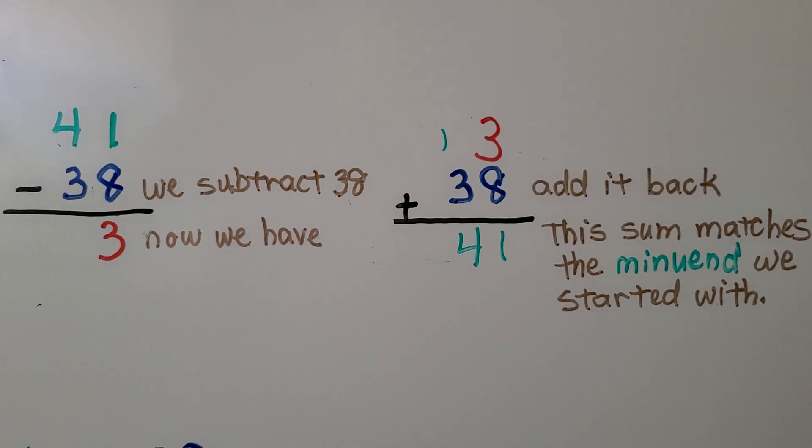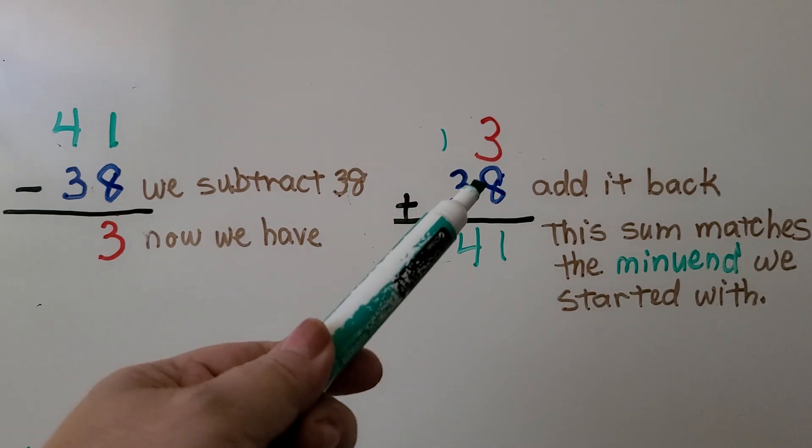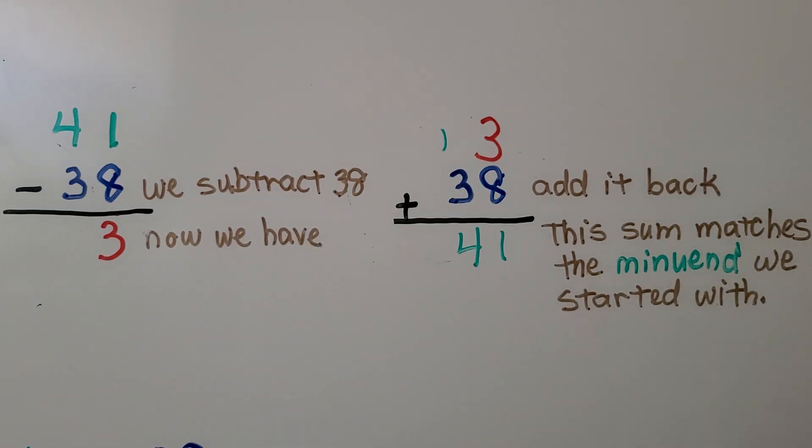So we can add back a number that has been subtracted, and the sum will match the number we started with, the minuend. We subtracted 38, we add it back to the difference, and it's equal to the minuend.